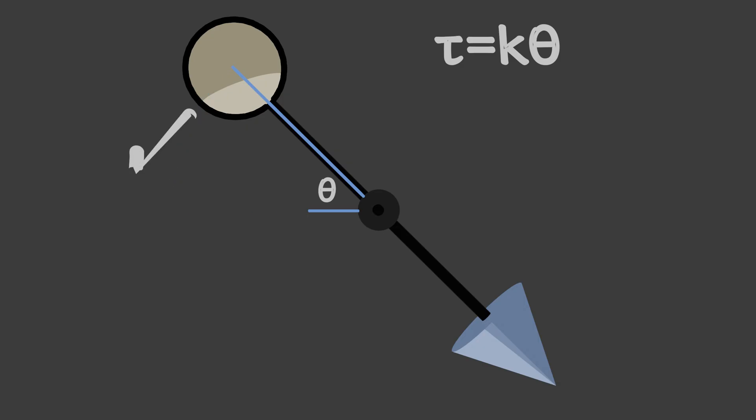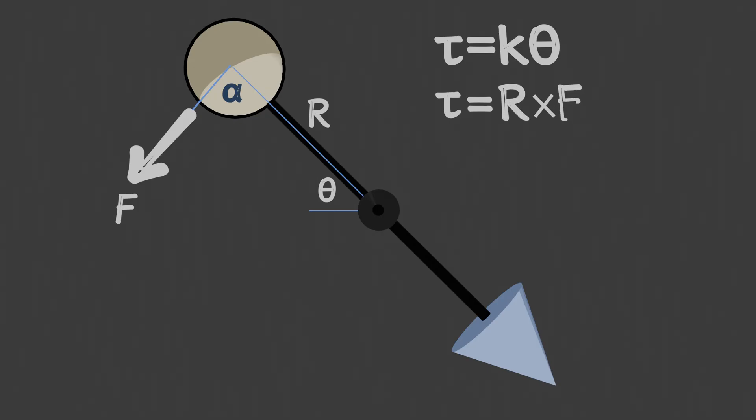Now the force F acting on the sphere, which is keeping the wire twisted at an angle theta, is the same force the ball exerts back. Using basic physics, we know that the torque is equal to the cross product of the distance from the center and the force applied. So torque equals R cross F which equals R times F sine alpha, where alpha is the angle between the horizontal rod's length from the center and the direction of the force. If we manage our experiment such that the force is always perpendicular, as sine of 90 degrees is 1, we can get rid of the sine term. So F equals torque divided by R and as torque is K times theta, F equals K times theta divided by R.